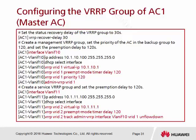I want to make AC1 become the master AC, so I use this command to modify the default priority of 100 to a higher value of 120. Later on, when AC1 and AC2 are both configured with VRP, AC1 will automatically become the master.